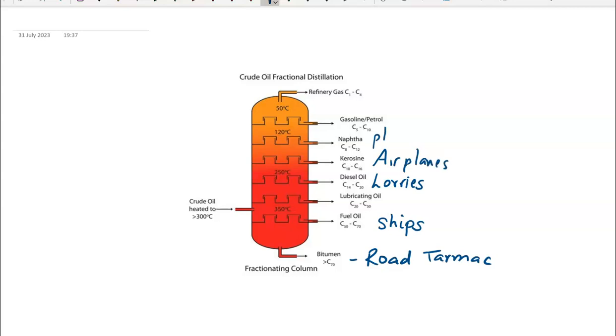Naphtha is used in pharmaceuticals to make medicine as a filler. Petrol is used in cars, and then you get the refinery LPG gas. All these different fractions have lots of different functions. As I said in the last video, each of these fractions is collected at different points with different temperatures. The top of the column is about 25 degrees and the bottom is just over 350 degrees.